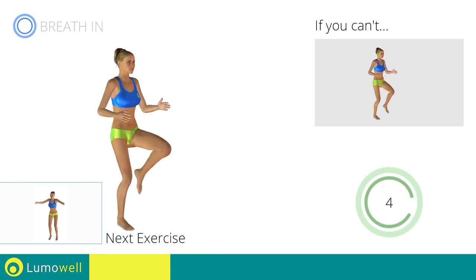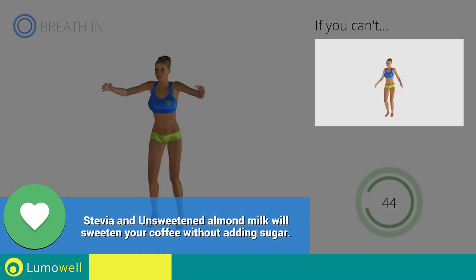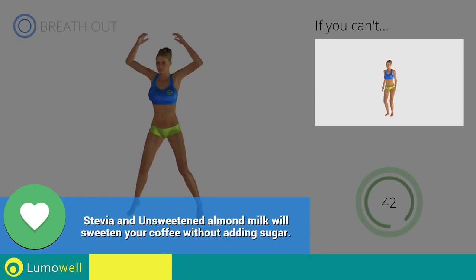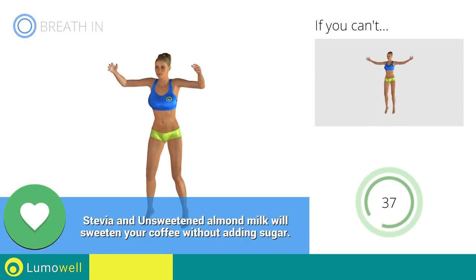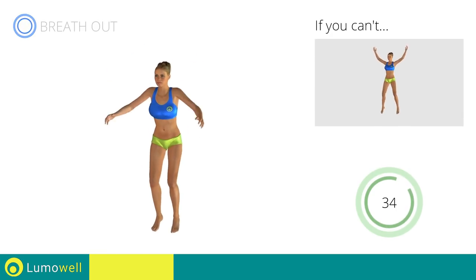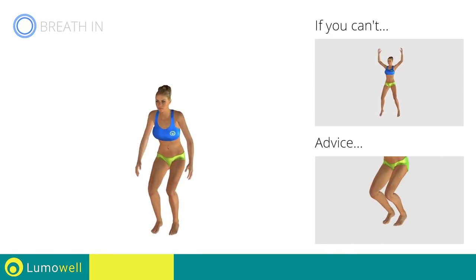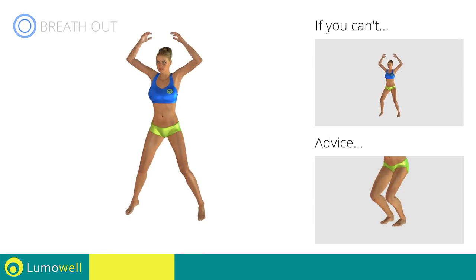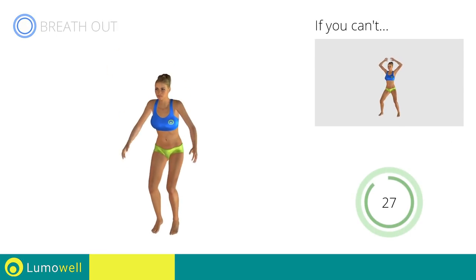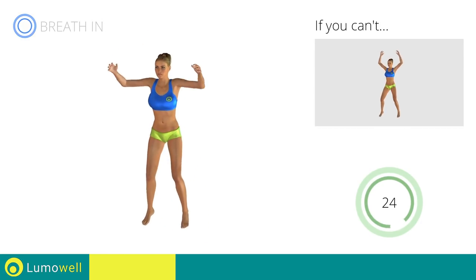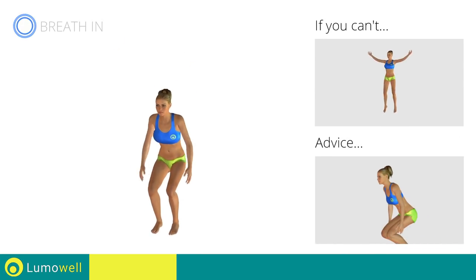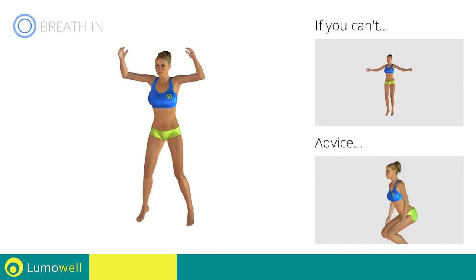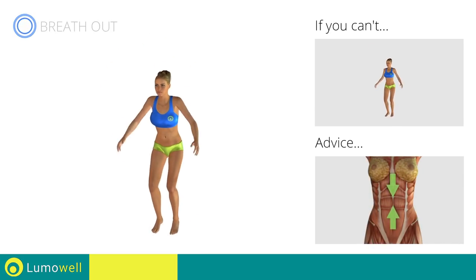Next exercise: power jack. Go! If you are unable to complete this motion, try simple jumping jacks. Do not bend or curve your back during the exercise — in order to avoid errors, keep your abdominals constantly tight.